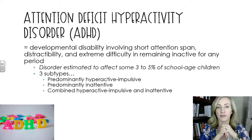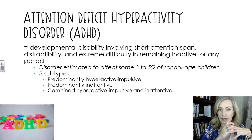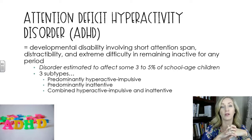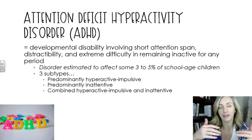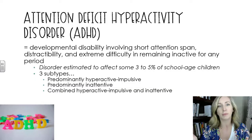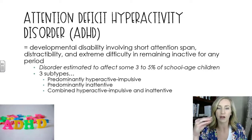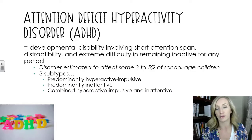The next one is Attention Deficit Hyperactivity Disorder, or ADHD. It is a developmental disability involving short attention span, distractibility, and extreme difficulty remaining inactive for any period of time — not able to sit still or focus. This is probably one of the better known disorders, but you want to make sure you have the terminology to write and speak about it articulately. This disorder is estimated to affect three to five percent of school-age children. There are subtypes: hyperactive-impulsive, predominantly inattentive, and combined hyperactive-impulsive and inattentive.